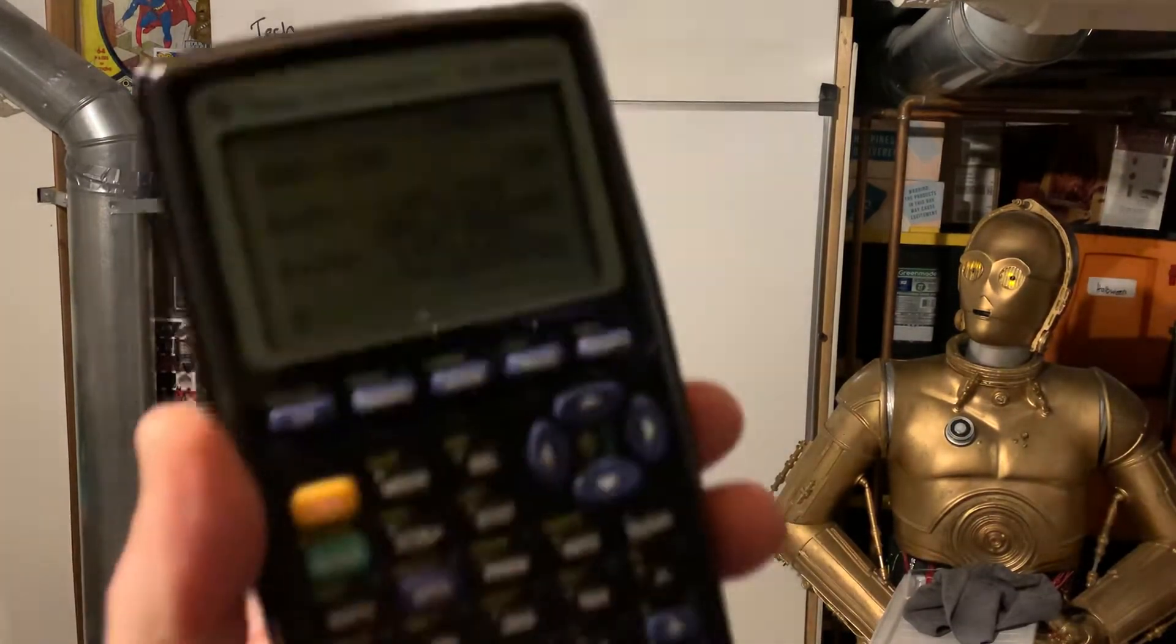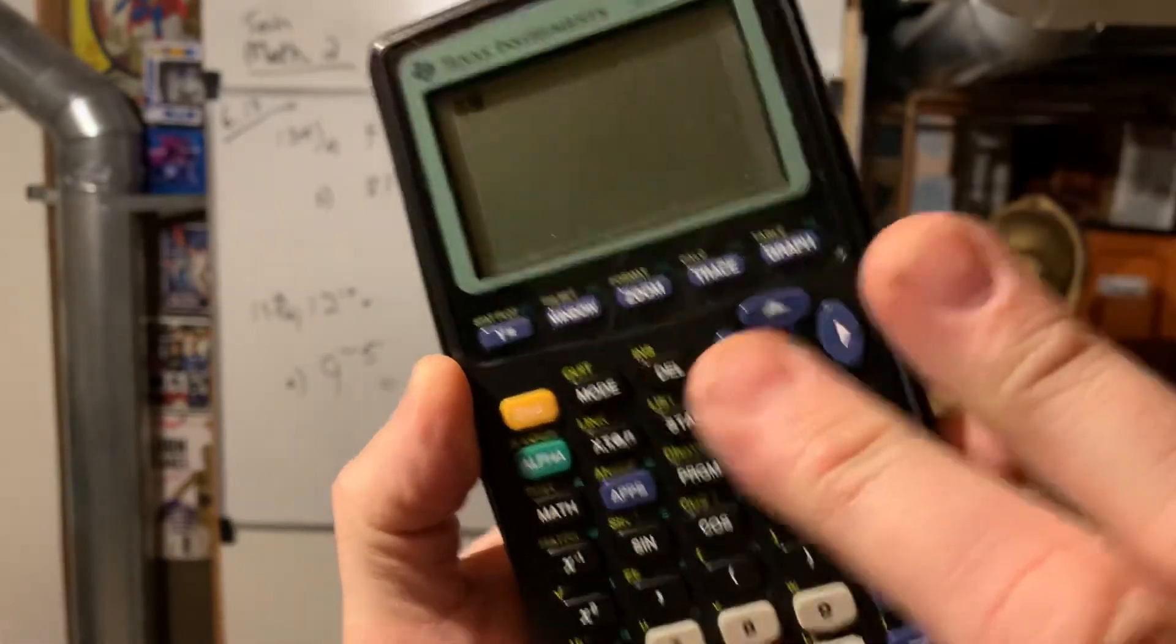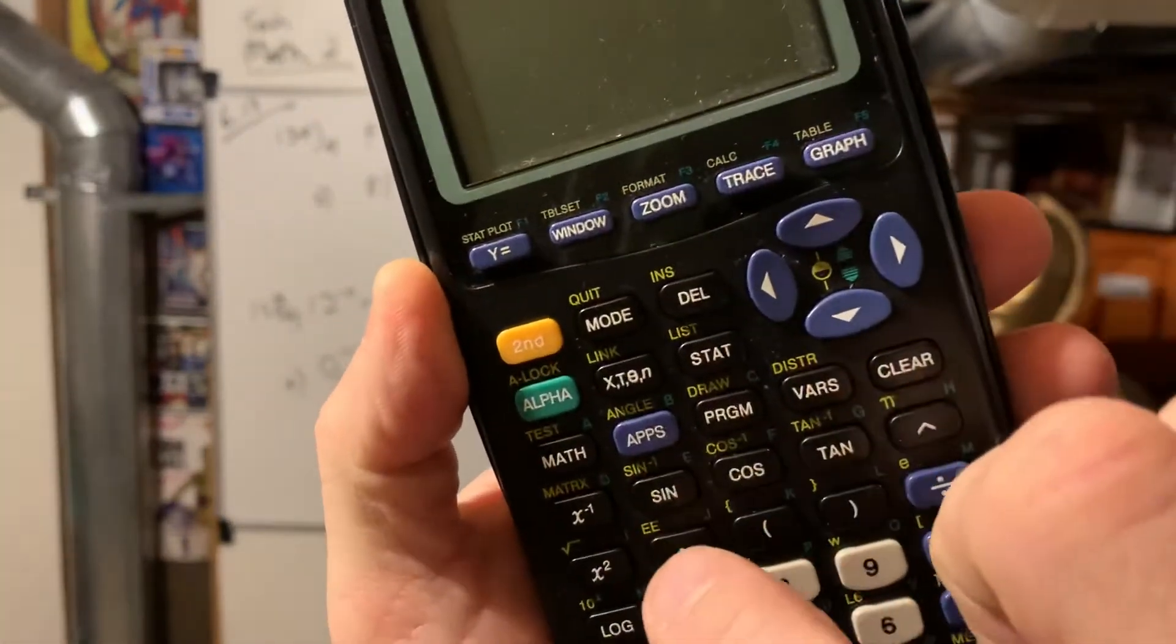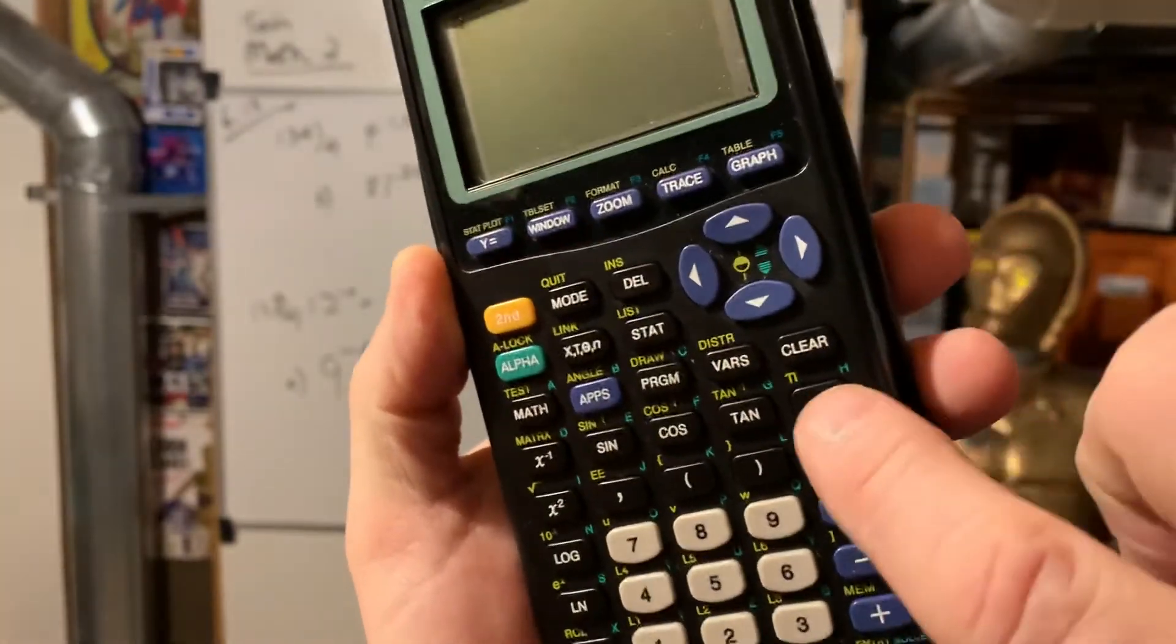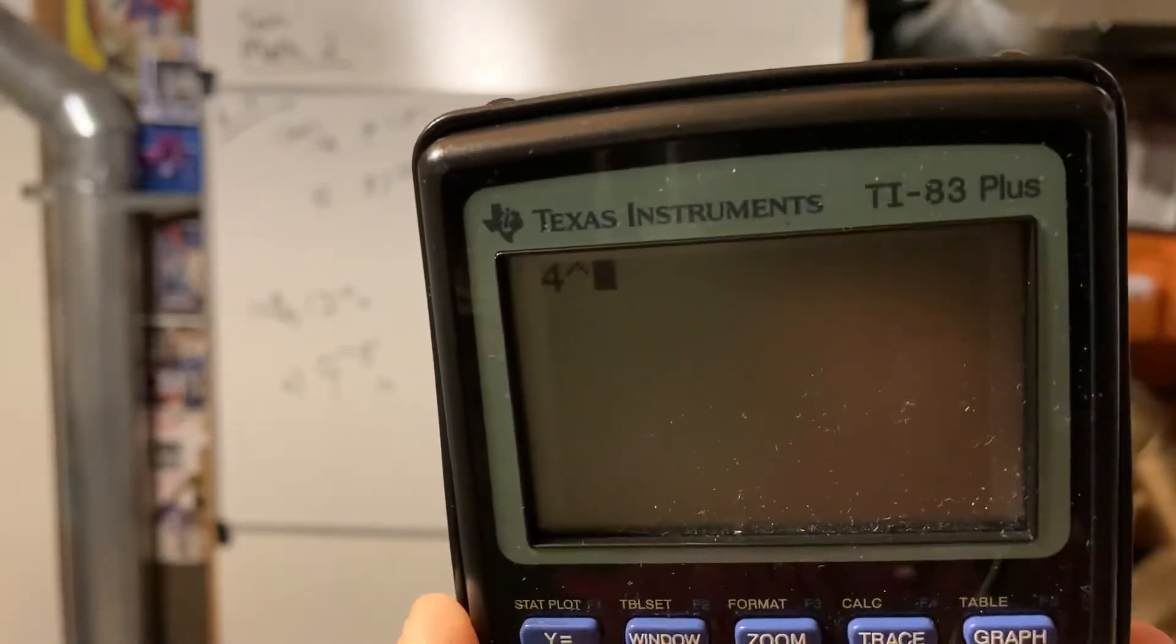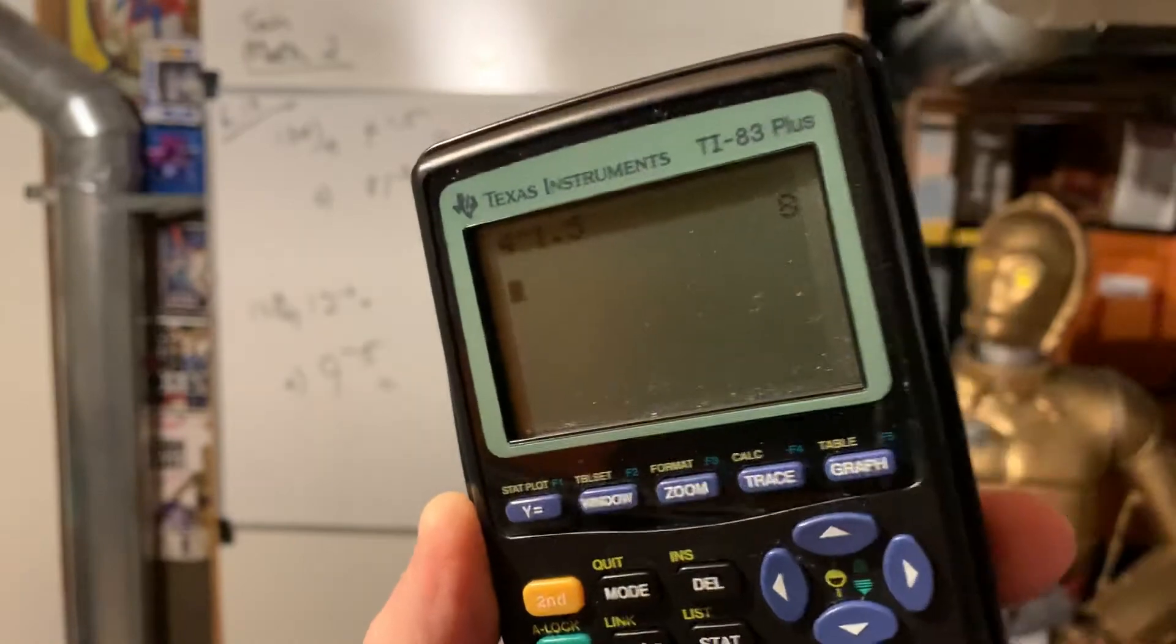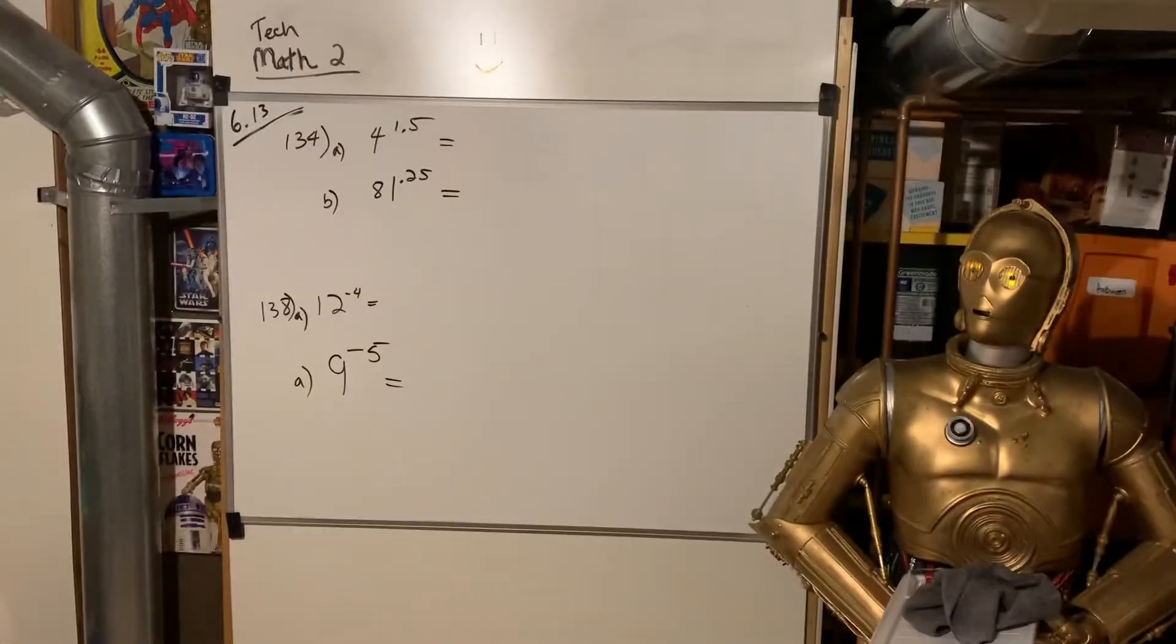So let's take a look at how to evaluate these on our calculator. So just really quickly, we're going to do 4, number 4, and then you hit the caret, this guy right here. That means power. And that's what it shows, 4 power. And then just type 1.5 and then hit enter. So that one is 8.